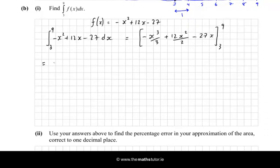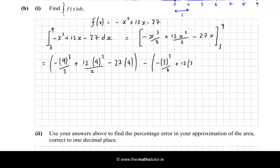So we get minus 9 cubed over 3. I'm going to put in the 9 first, so I'll put a big bracket around that. Plus 12 times 9 squared over 2, minus 27 times 9. And then subtract, minus 3 cubed over 3, plus 12, 3 squared over 2, minus 27 times 3. Close that bracket.